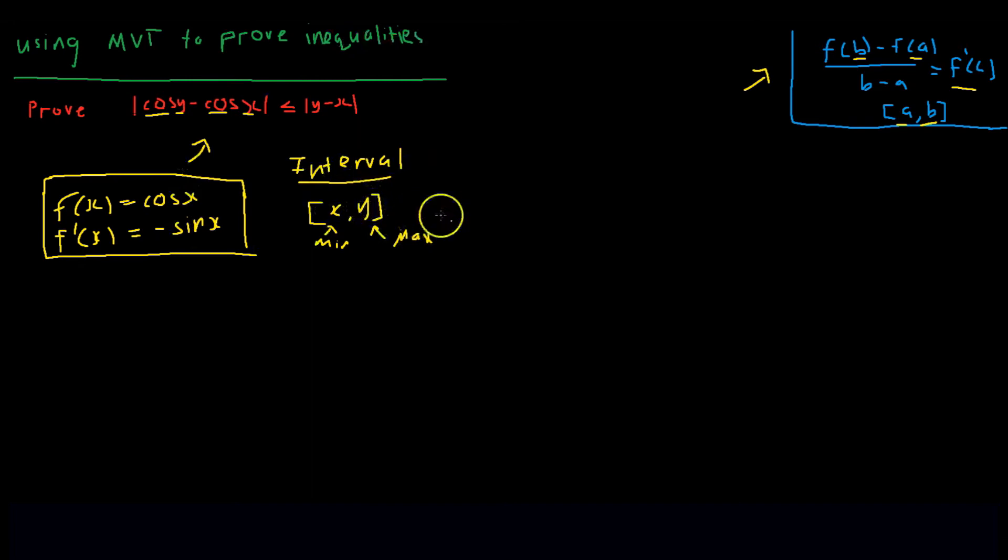Now all that's left to do is just apply the Mean Value Theorem. We have f of y minus f of x over y minus x is equal to f prime of c. Now actually evaluating this, this would be cos y minus cos x over y minus x is equal to negative sin of c.